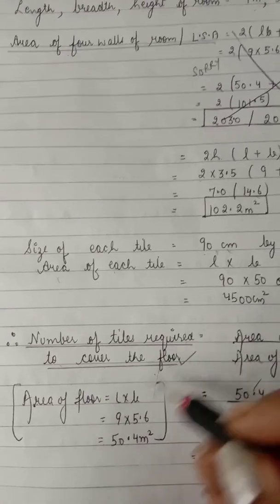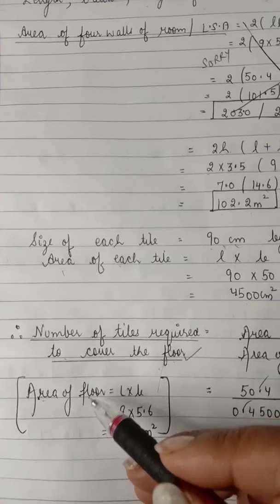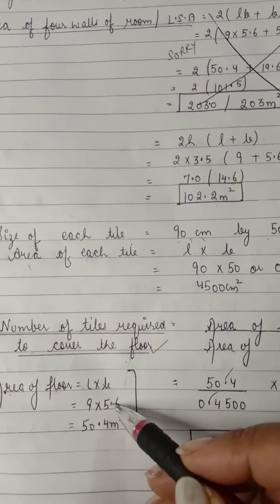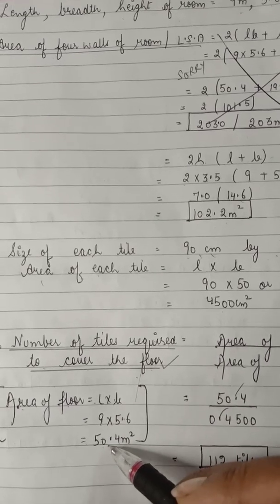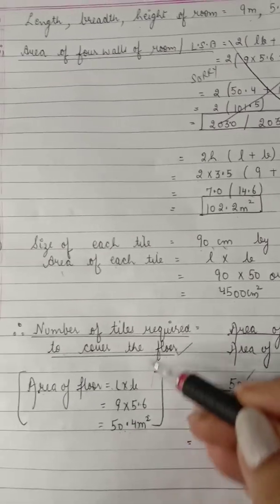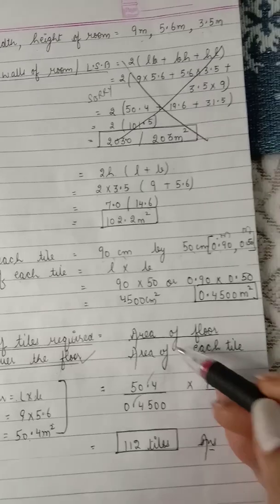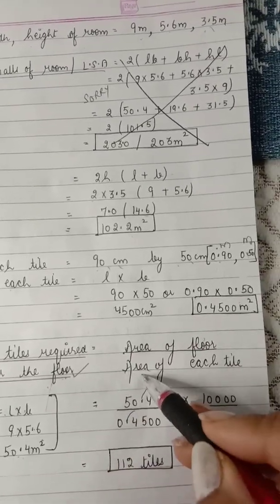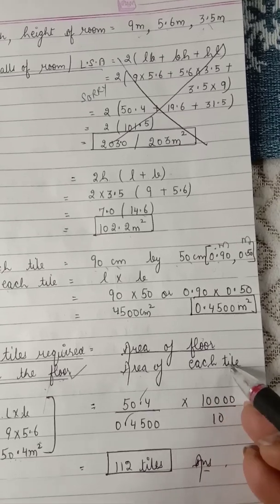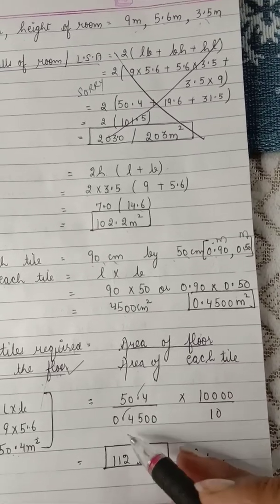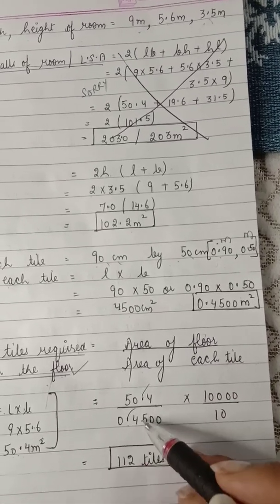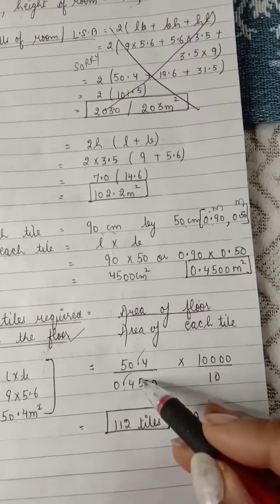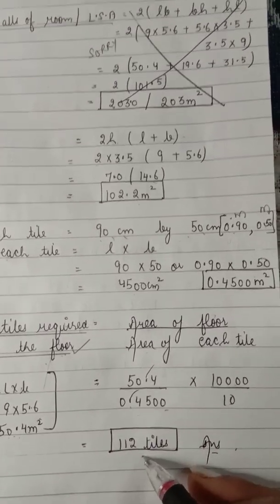To find the number of tiles required to cover the floor, we need the area of the floor: l × b = 50.4 meter square. Number of tiles = area of floor ÷ area of each tile = 50.4 ÷ 0.4500. Removing the decimals and cancelling, we get 112 tiles.